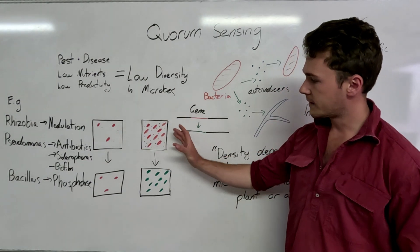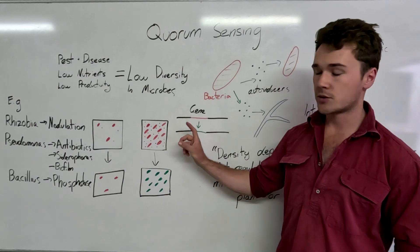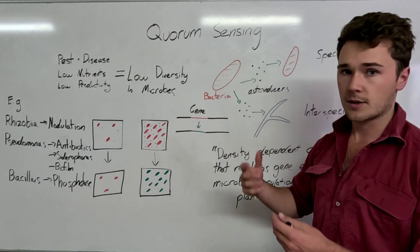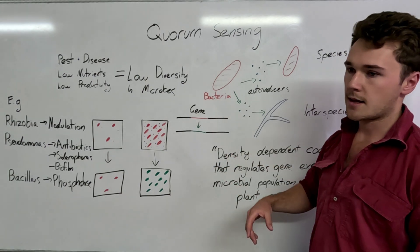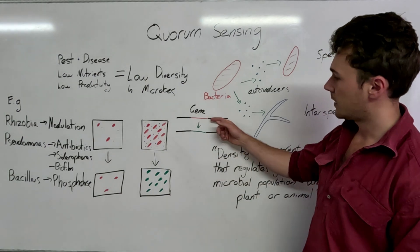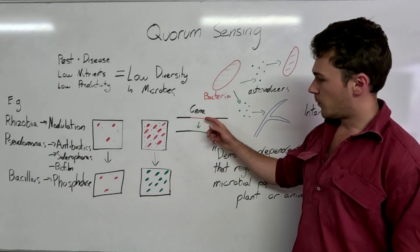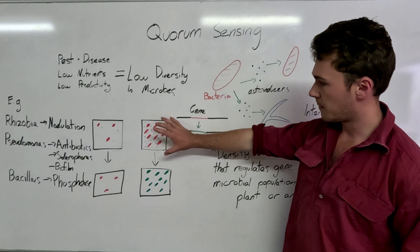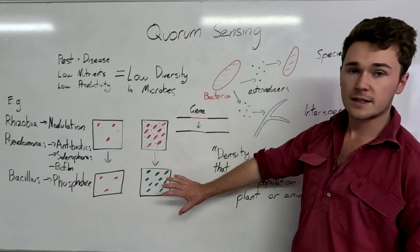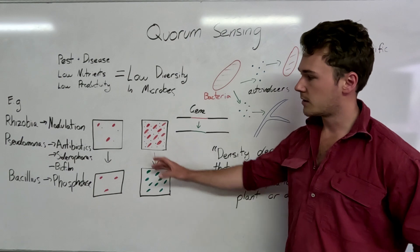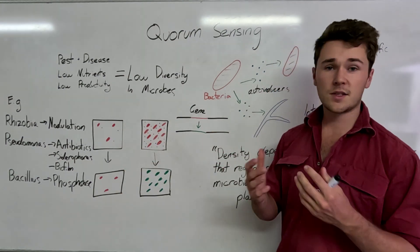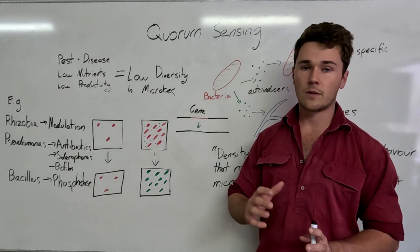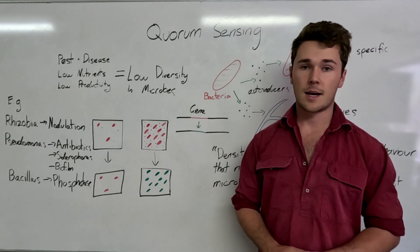So what happens is once that threshold is reached, the genes within the bacteria or the plant or the animal or whatever is switched from non-expressive to expressive. We can talk about what will happen next, but effectively all these bacteria are suddenly going to be expressing that gene when the threshold is reached. If it's not, nothing's going to happen.